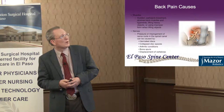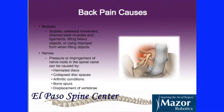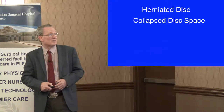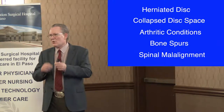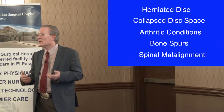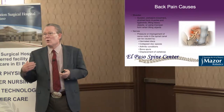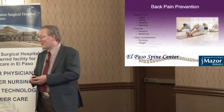There are soft tissue conditions like muscle sprains that usually resolve with time, but there are certain conditions that involve the nerves — like herniated discs, collapsed discs, arthritic conditions, bone spurs, and spinal malalignment. These can pinch a nerve, causing pain in the back, buttock pain down the leg — known as sciatica — as well as numbness, tingling, weakness, and difficulty walking. A certain percentage of those people will need surgical intervention.